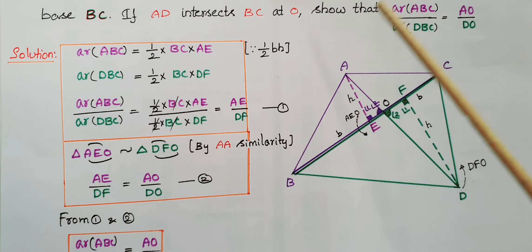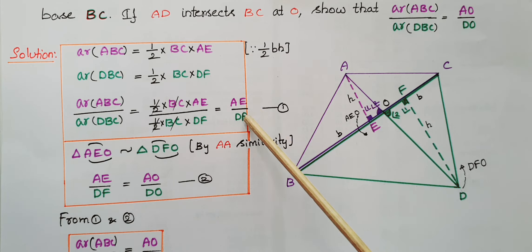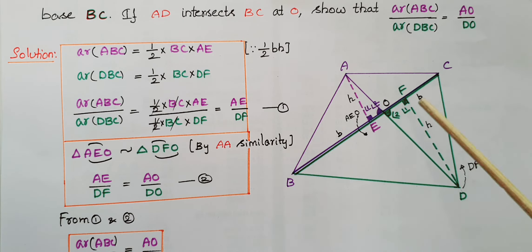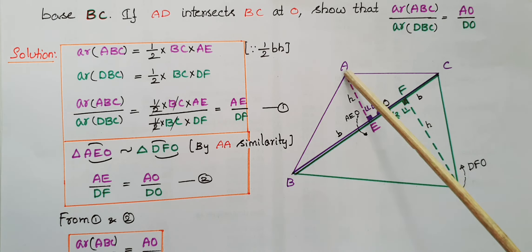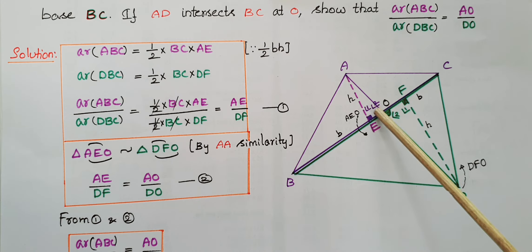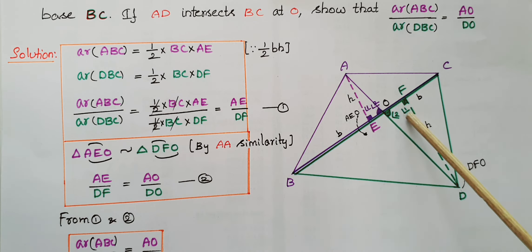We need to prove the ratio equals AO by DO, but we got AE by DF. So we must find a relation between AE/DF and AO/DO. Looking at the figure, there are two small triangles: triangle AEO and triangle DFO. Angle AEO equals 90 degrees and angle DFO equals 90 degrees, since AE and DF are altitudes. Also, at point O, angles AOE and DOF are vertically opposite angles, so they are equal. By AA similarity criteria, we can say these two triangles are similar.